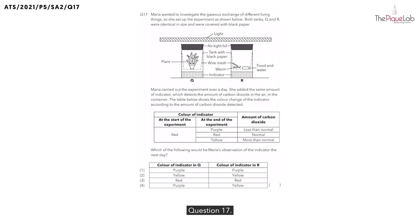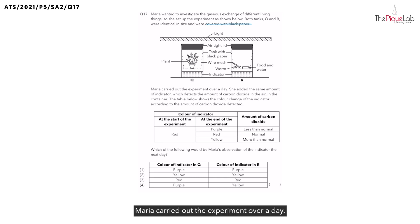Question 17. Maria wanted to investigate the gaseous exchange of different living things, so she set up the experiment as shown below. Both tanks, Q and R, were identical in size and were covered with black paper. Maria carried out the experiment over a day. She added the same amount of indicator, which detects the amount of carbon dioxide in the container. The table below shows the color change of the indicator according to the amount of carbon dioxide detected.